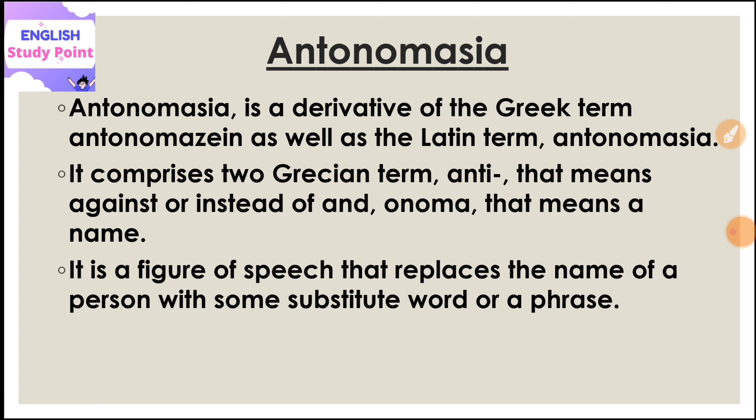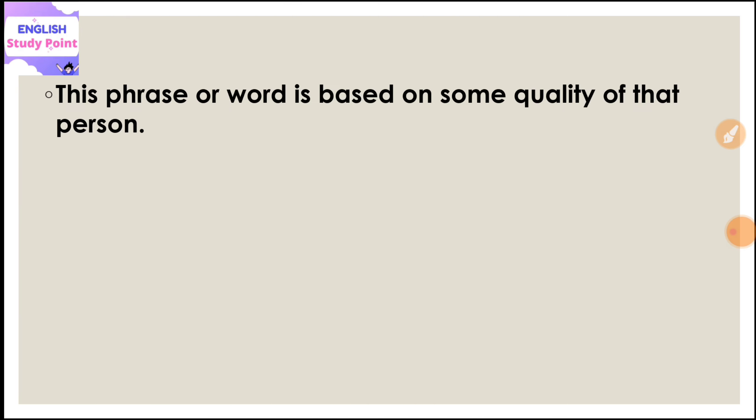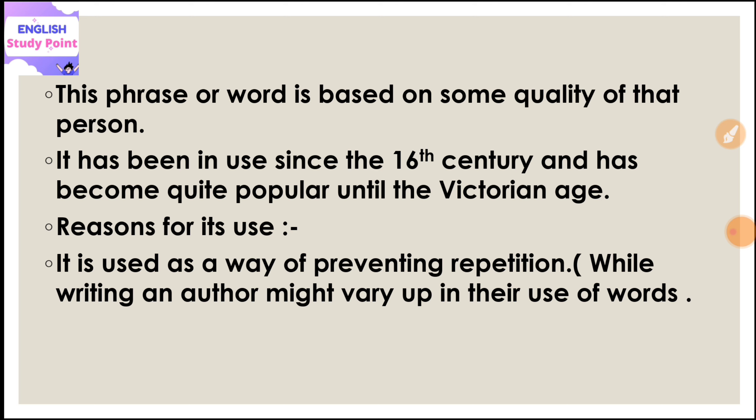The second part, 'onoma,' means 'name.' So antonomasia is a figure of speech that replaces the name of a person with a phrase or word based on some quality of that person. This particular figure of speech has been in use since the 16th century and became quite popular through the Victorian age. One main reason it is used is as a way of preventing repetition, so that words do not repeat every time.